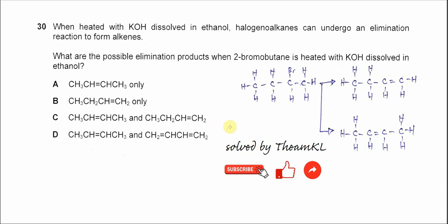Question 13. When heated with KOH dissolved in ethanol, a haloalkane can undergo elimination to form the alkene. What are the possible elimination products when 2-bromobutane is heated with KOH dissolved in ethanol?